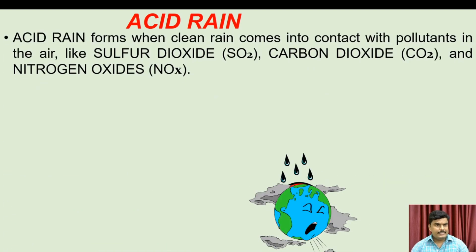Acid rain forms when clean rain comes into contact with pollutants in the air, like sulfur dioxide, carbon dioxide (CO2), and nitrogen dioxide (NO2).